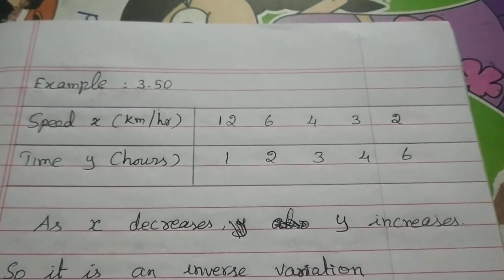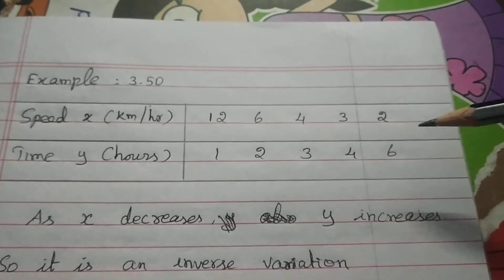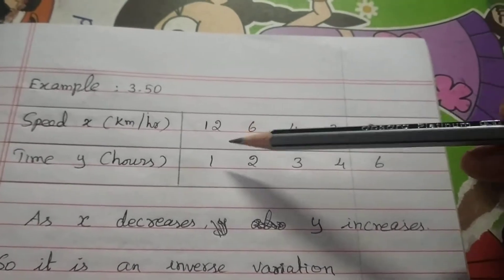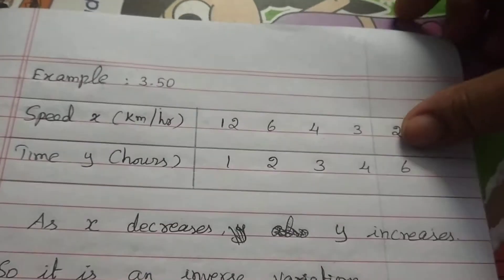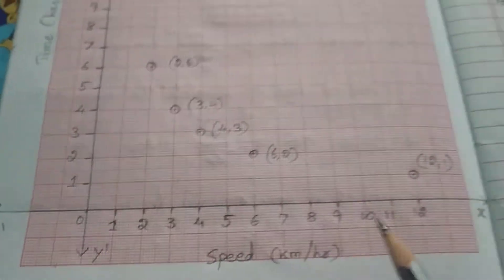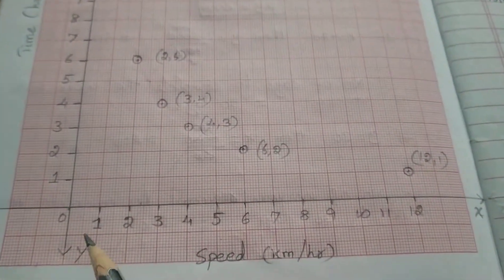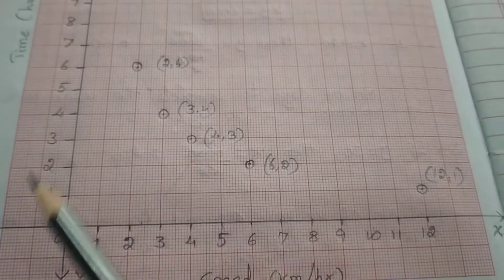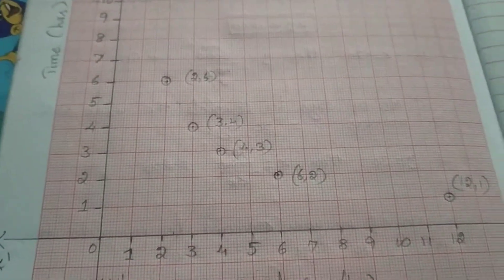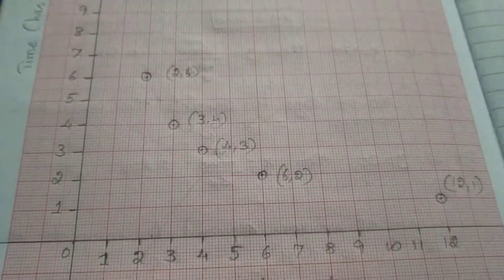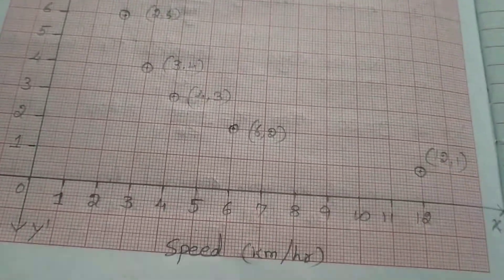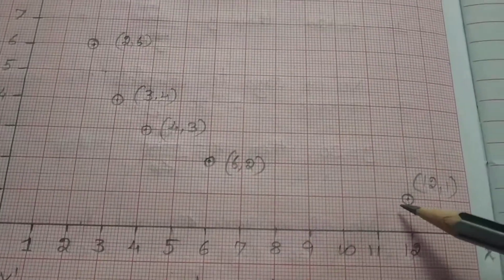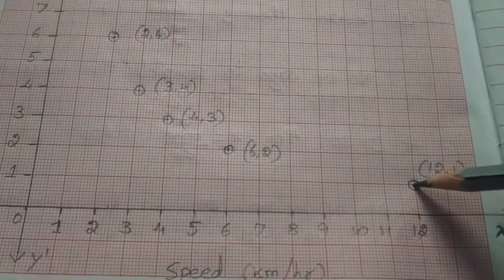On the graph, the x-axis and y-axis each represent 1 unit per cm. You can see units 1, 2, 3, 4 on each axis. The first point is (12, 1) — x equals 12, y equals 1. The second point is (6, 2) — x equals 6, y equals 2.